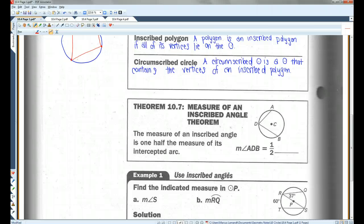All right, theorem 10.7. The measure of an inscribed angle is one-half the measure of its intercepted arc. So in this case, the measure of angle ADB is one-half the measure of arc AB. Please don't get this confused with central angles. Central angles, if the vertex is on the center, it equals the same measure as the arc. But if the angle is inscribed, it's half.